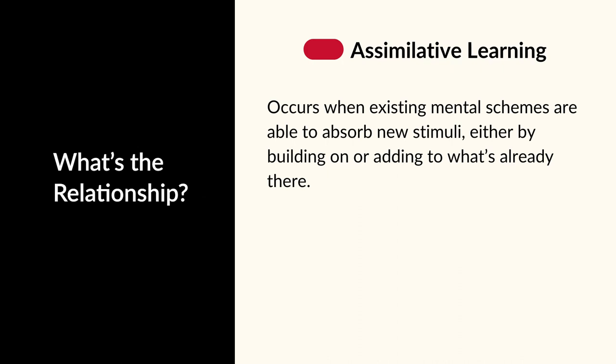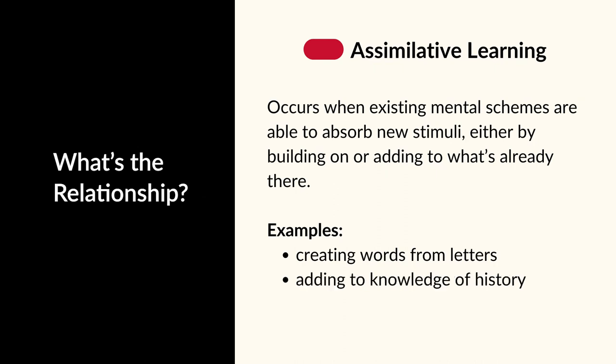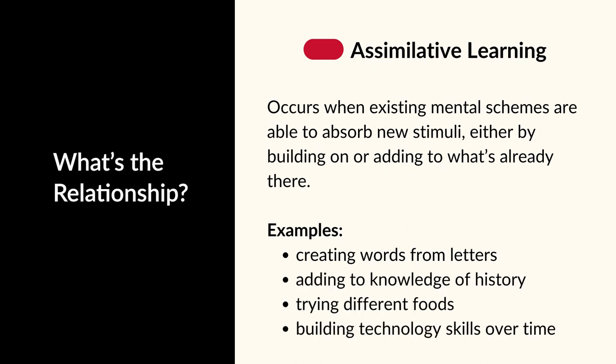Second, assimilative learning occurs when existing mental schemes are able to absorb new stimuli, either by building on or adding to what already is there. Assimilative learning represents the more generalized learning acquired regularly through the life course as individuals add or expand mental models, either formally or informally. Examples include creating words from letters, adding to our knowledge of history, trying different foods, or building technology skills over time.